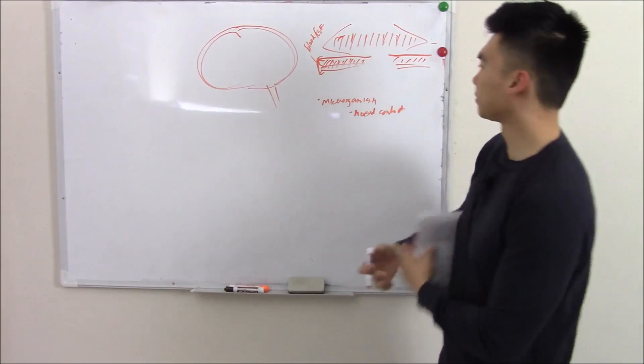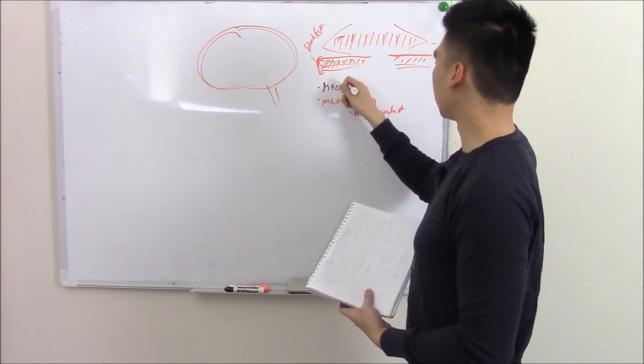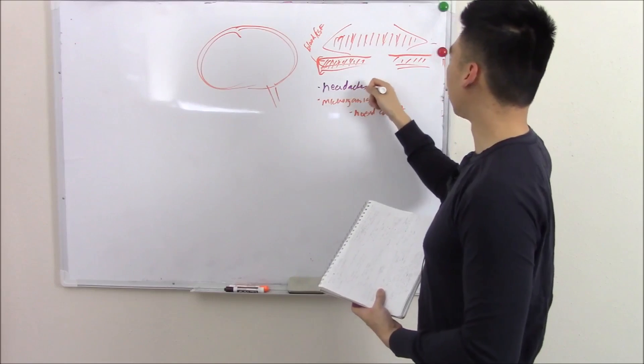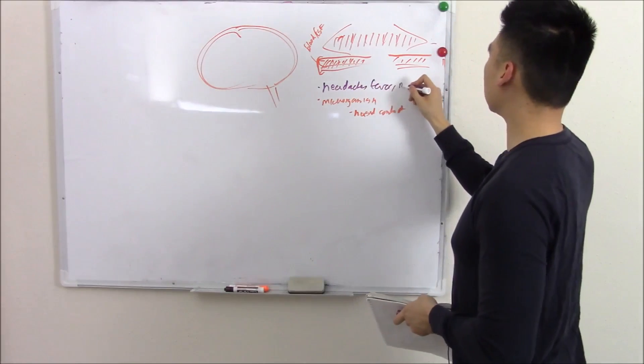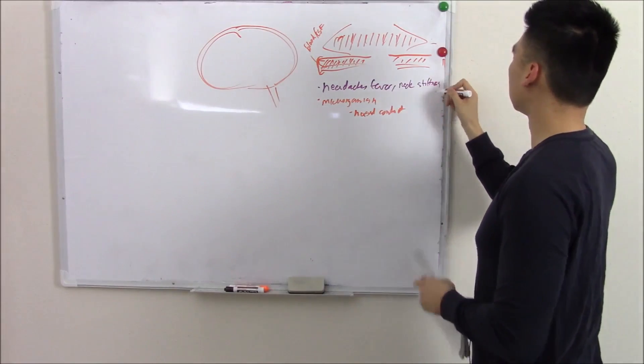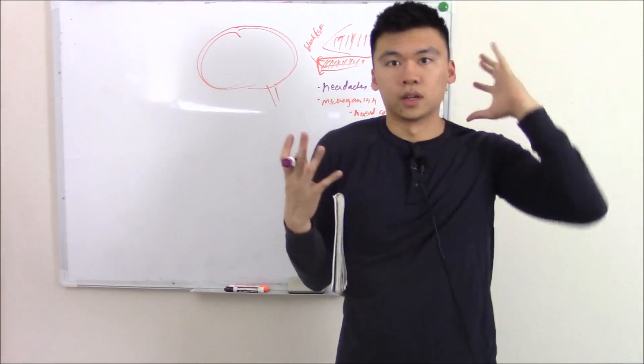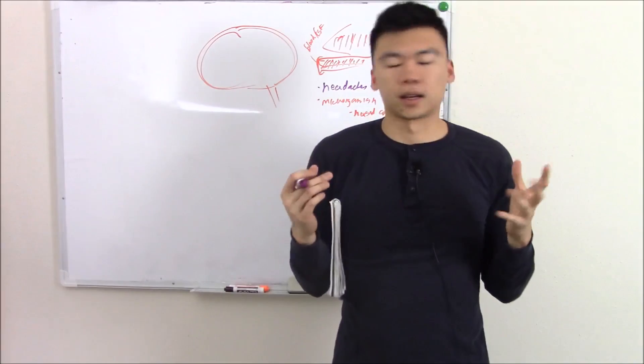So what are some signs? Classic signs are headache. You're gonna have fever because it is an infection. And the biggest giveaway is neck stiffness. Once you have an infection inflammation of your meninges you don't want to do anything to move it. So you don't want to turn your neck.